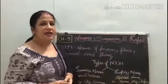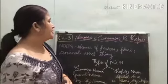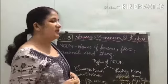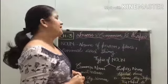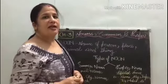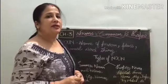Noun kya hota hai? Kisi bhi cheese ka, kisi bhi person ka name, kisi bhi place ka, kisi bhi animal ka naam — yeh sab noun hai.